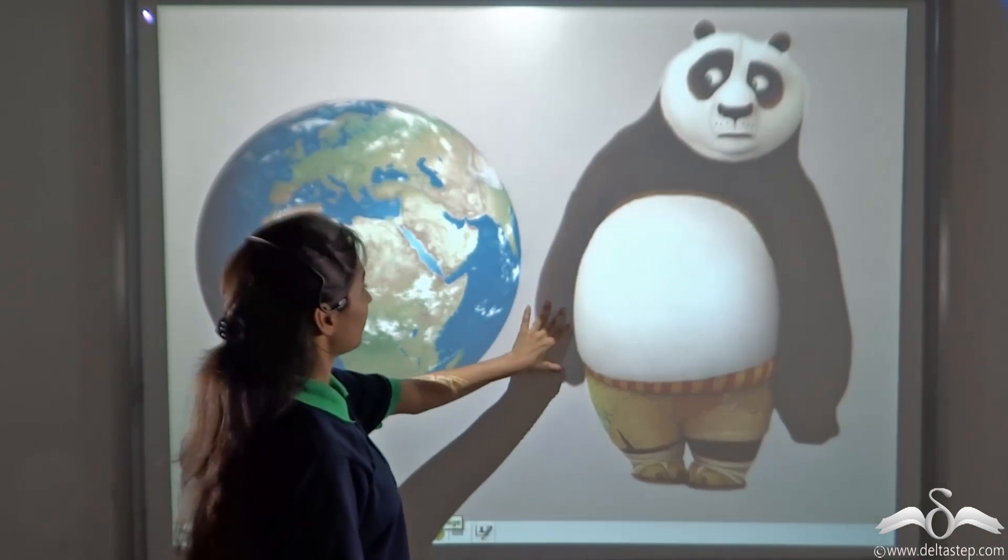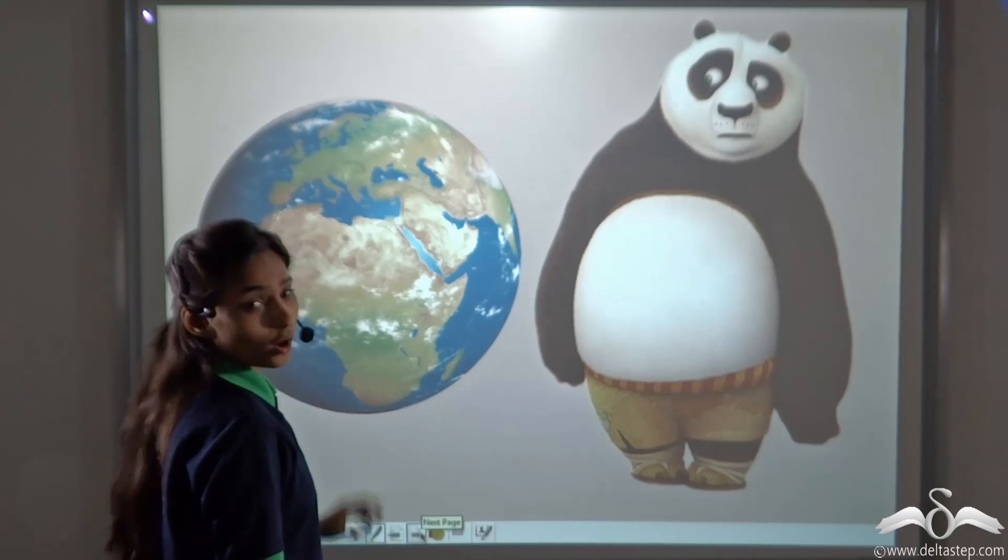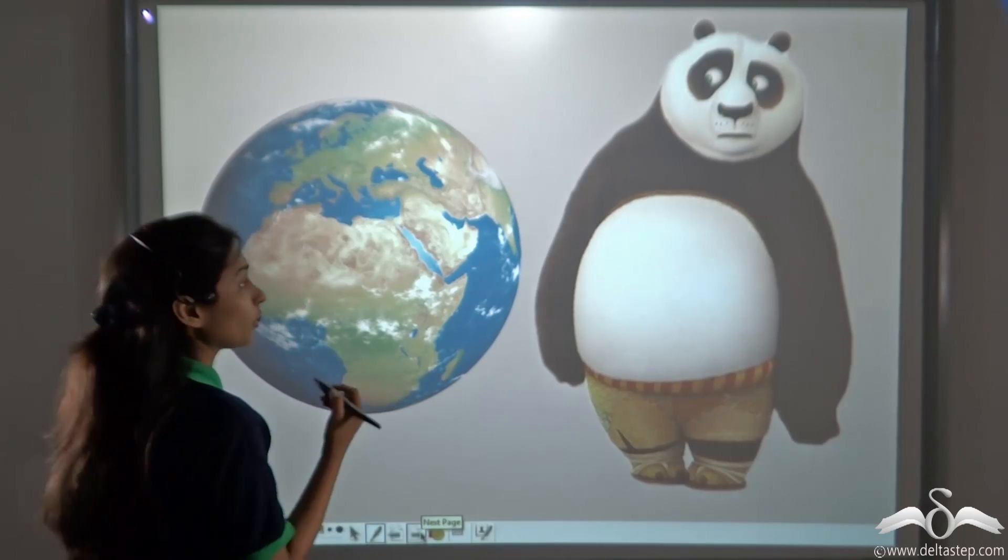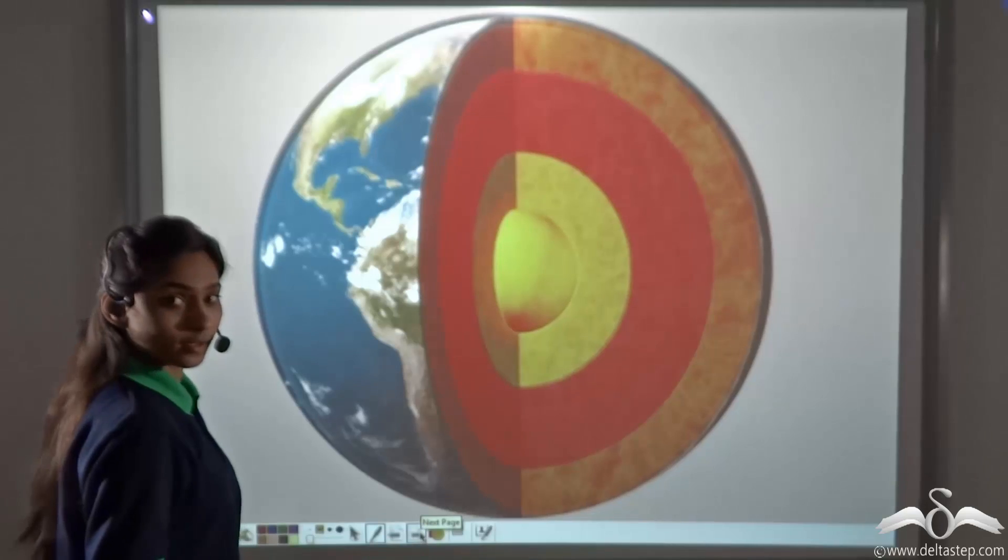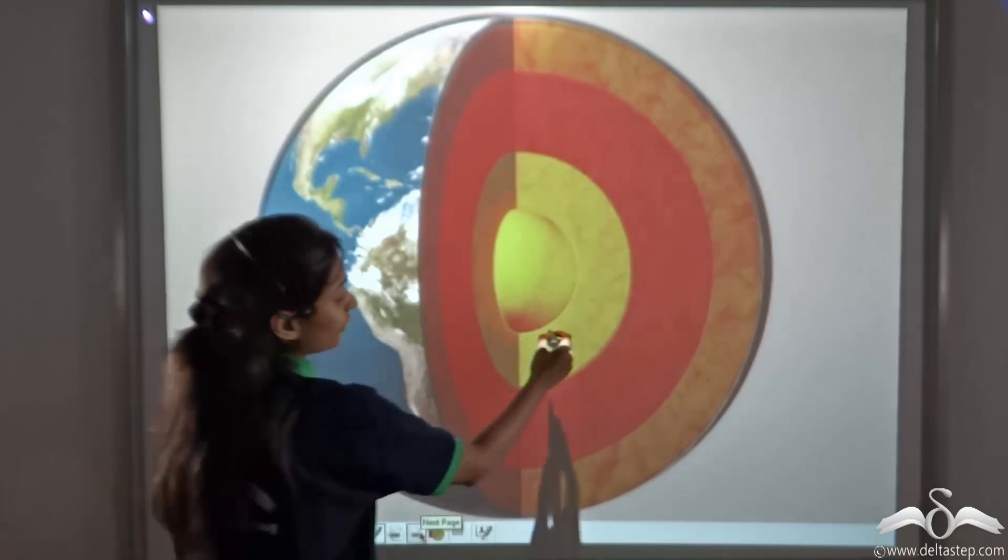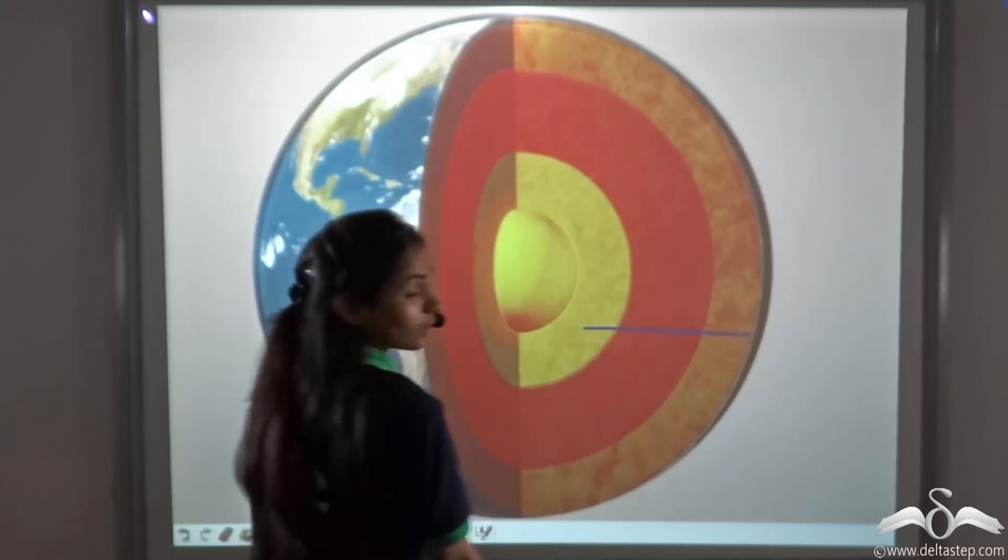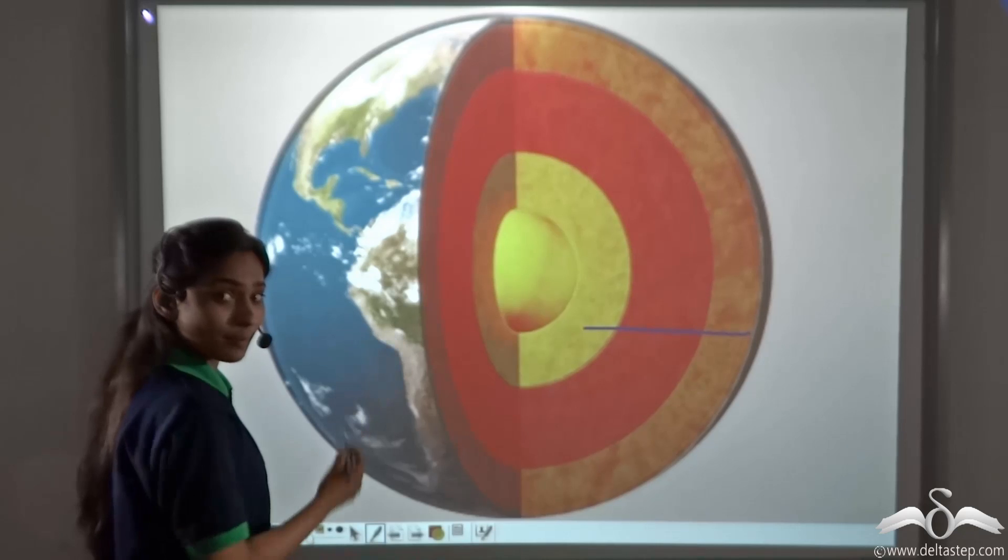Now, this Kung Fu Panda once saw this earth and thought let me eat it and see what it tastes like. What did he do? He took a bite from the earth and saw that even earth has layers, just like the egg or the apple.